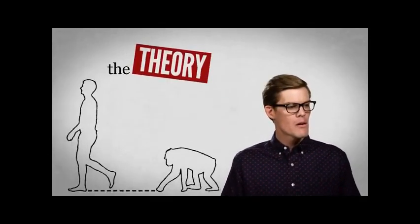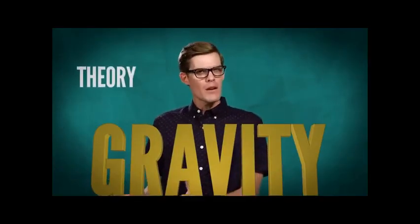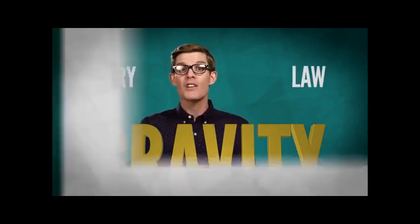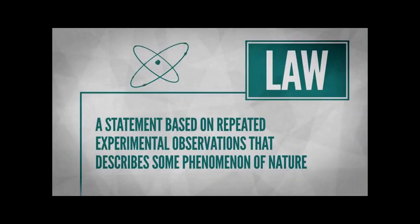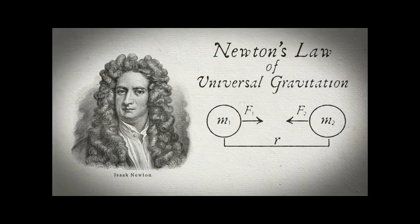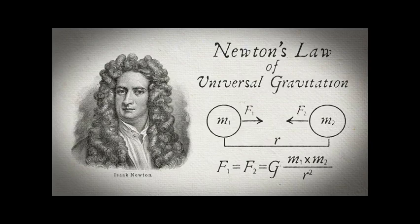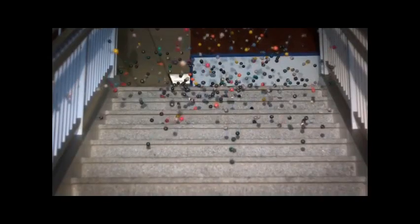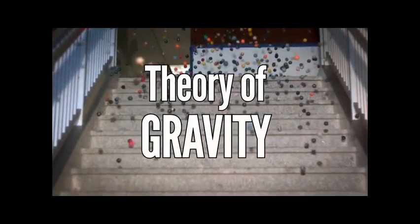What about something as fundamental as gravity? Is that a theory, or is it a law? In science, a law is a detailed description — usually using math — of how something happens, like the movement of gas molecules related to temperature, or how mass and energy are always conserved. But a law doesn't tell us why something happens. Gravity, as it turns out, is both a law and a theory. Newton's law of universal gravitation describes precisely how two objects attract each other based on their masses and the distance between them. But Newton's equation doesn't describe what is happening or why — to do that, we need a theory of gravity.